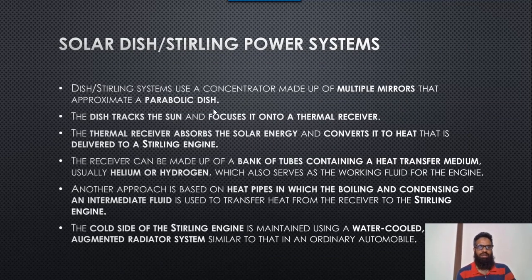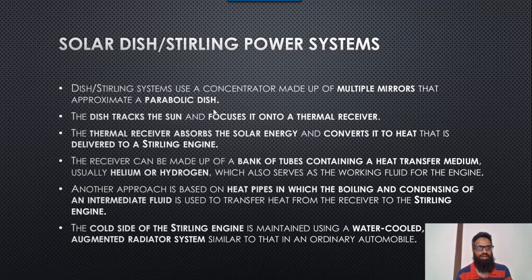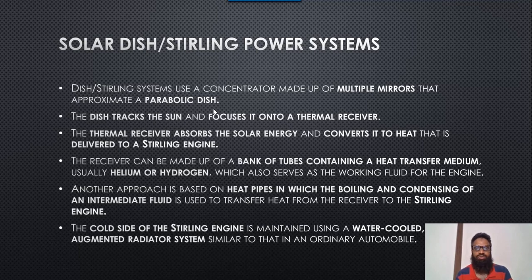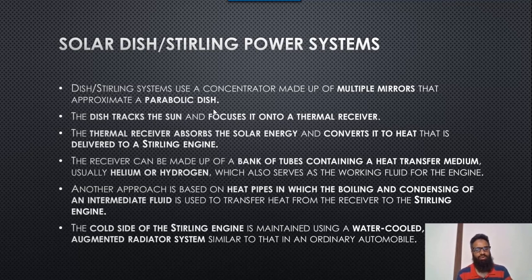For the dish-Stirling power system, a concentrator made up of multiple parabolic dish facets tracks the sun and focuses sunlight onto a thermal receiver. The thermal receiver absorbs solar energy and converts it into heat delivered to the Stirling engine. The receiver can be made up of a bank of tube containers with a heat transfer medium — usually helium or hydrogen — which also serves as a working fluid for the engine. Another approach uses a heat pipe in which boiling and condensing of an intermediate fluid transfers heat to the Stirling engine. The cold side of the engine is maintained using a water-cooled, fan-augmented radiator system similar to ordinary automobiles.